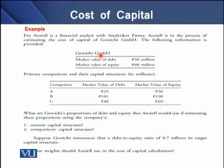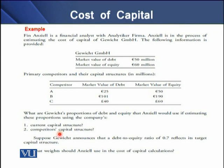In the example, we have a given company with the market value of its debt and market value of its equity, along with three competitors showing their individual debt and equity components. The question is: what are the appropriate proportions of debt and equity to use when estimating these proportions using the company itself, its competitors' capital structure, and a scenario where Gavich announces that a debt-to-equity ratio of 0.7 reflects its target capital structure — what weights would Enzyl use in the cost of capital computation?